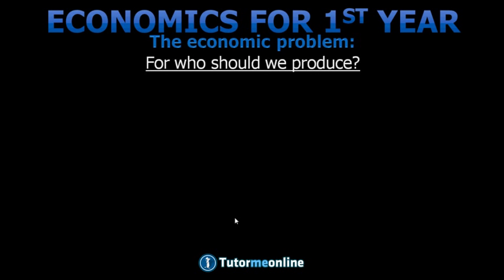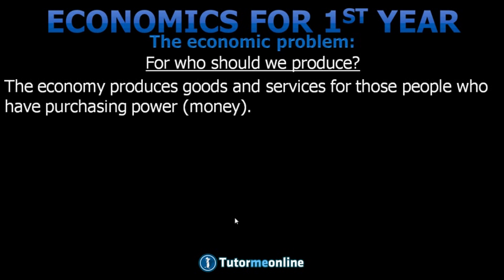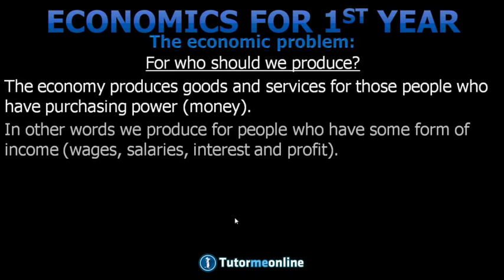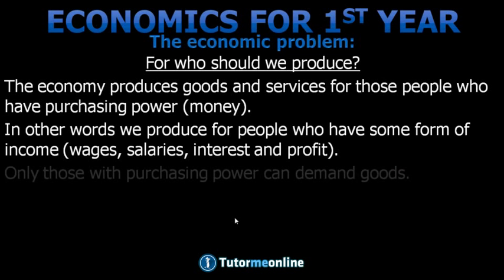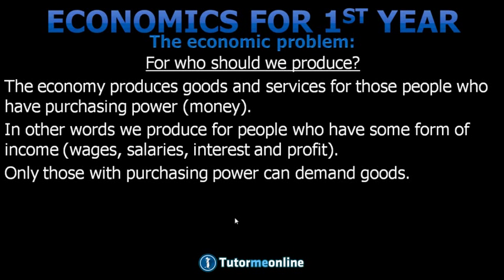We now move on to our second production question: for whom should we produce? The economy produces goods and services for those people who have purchasing power — money. In other words, we produce for people who have some form of income, like wages, salaries, interest, and profit. Only those with purchasing power can demand goods.